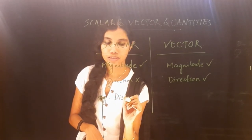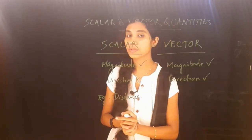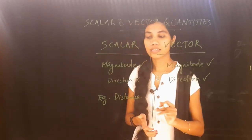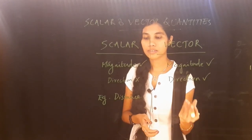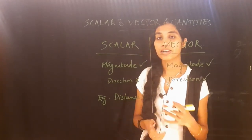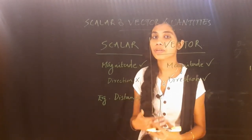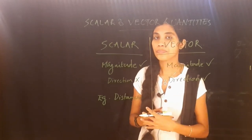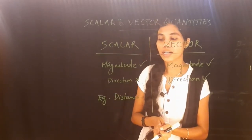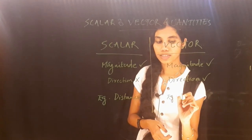For example, distance is a scalar quantity. If we measure distance between A and B — 10 meters or 20 meters — we can state the magnitude. But we cannot and do not specify direction. That is why distance is a scalar quantity.